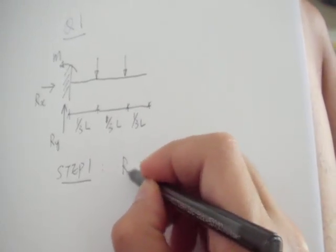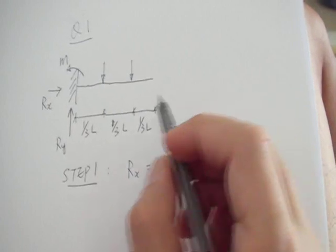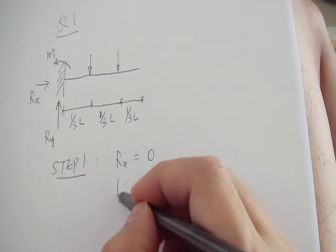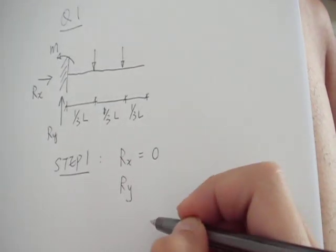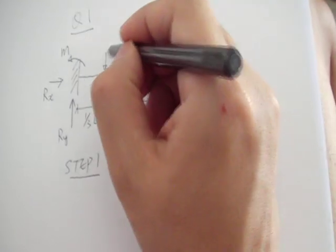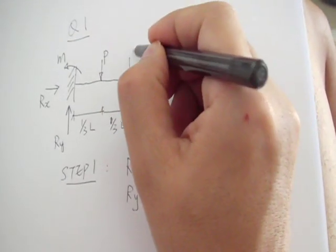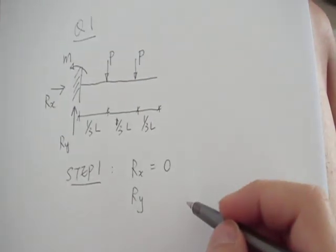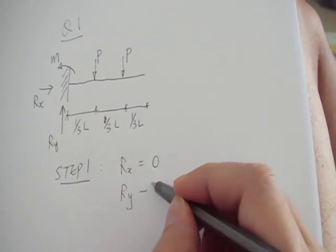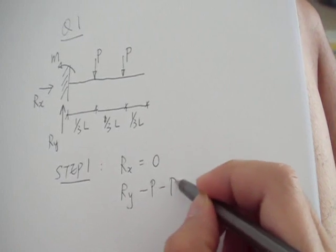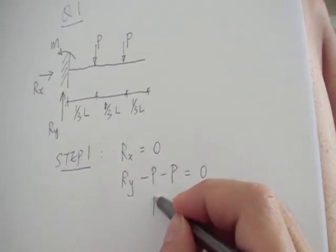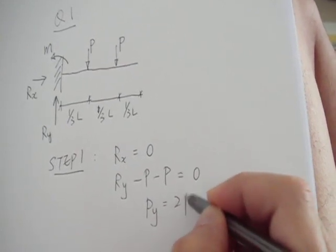So obviously Rx is zero because there's no horizontal force at all on the structure. Then for vertical equilibrium: Ry plus the two concentrated loads — so Ry is going up, positive, then minus P and minus P equals zero. So Ry is simply equal to 2P.